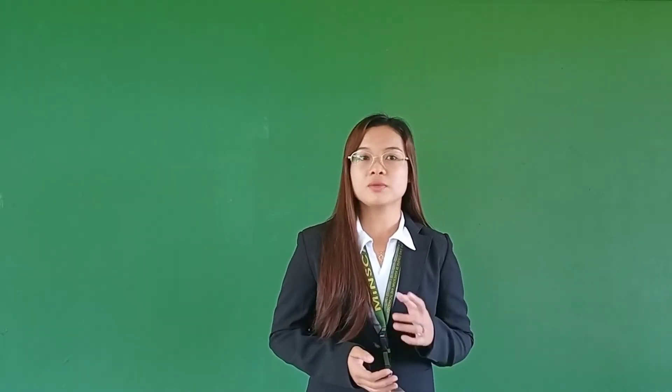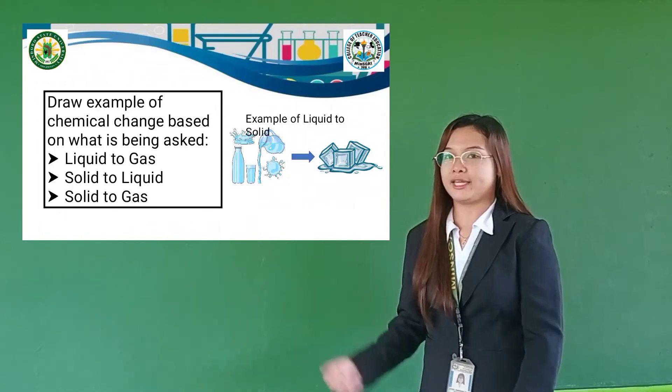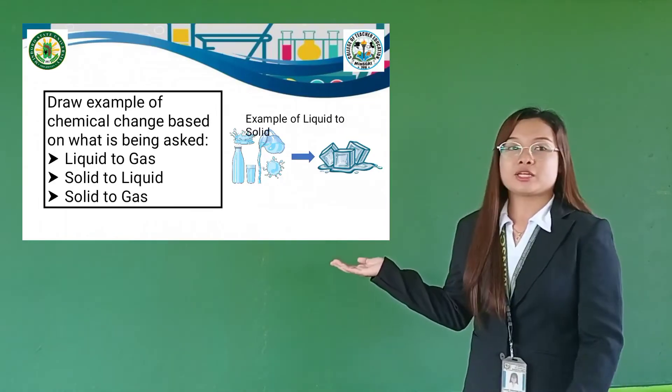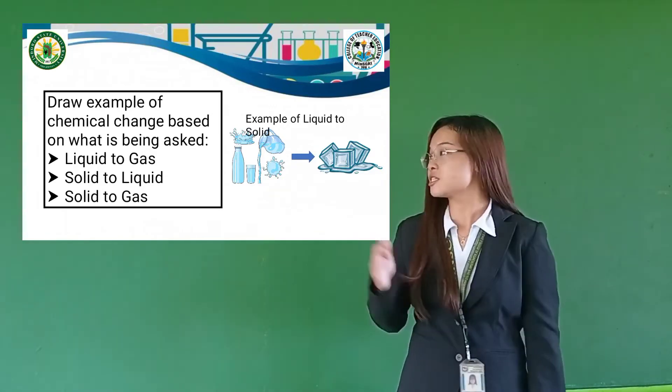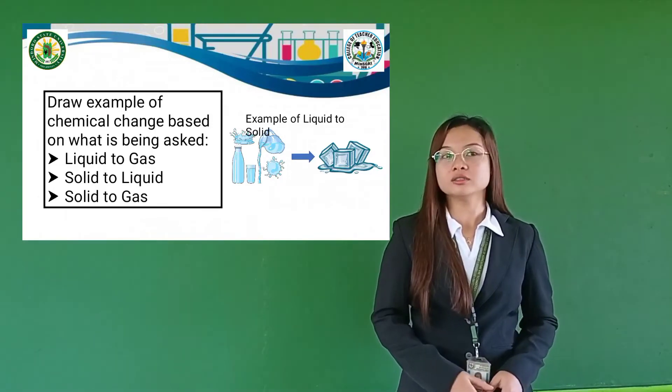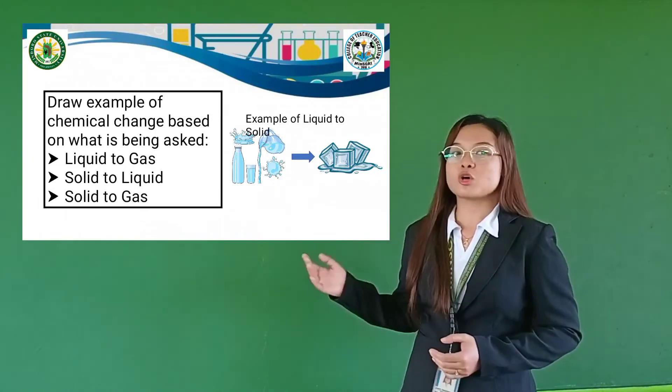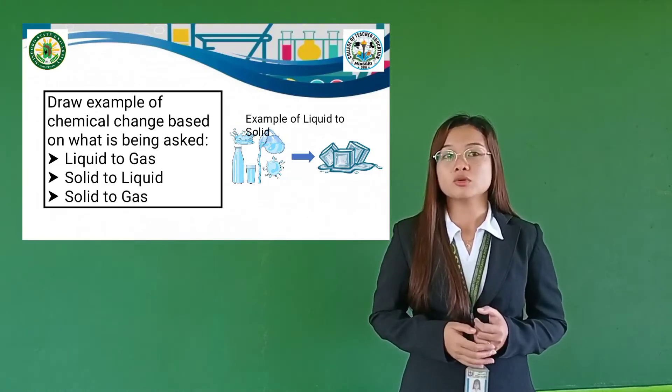It's clear to everyone. May your dreams come true. At this juncture, you are now going to apply what our topic is all about. This will be done individually — your drawing and art skills will be measured here. You will draw an example of chemical changes; you may put an arrow to define the changes. There is an example in the presentation you may use as your guide. The directions: draw examples of chemical changes — first, liquid to gas; second, solid to liquid; and last, solid to gas. I am giving you 5 minutes to finish your work.